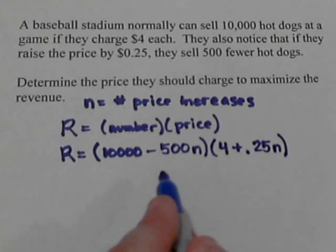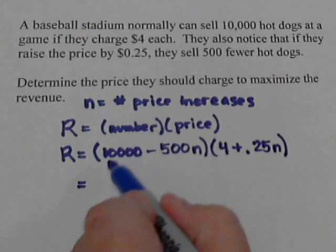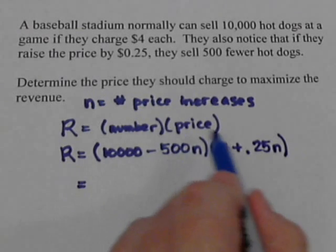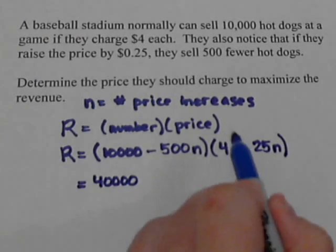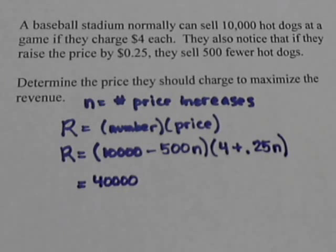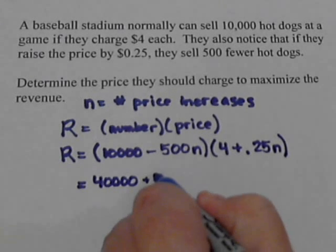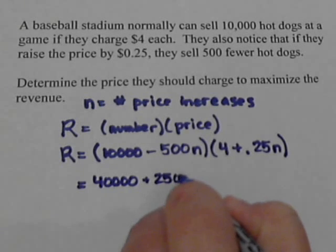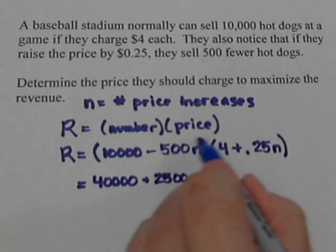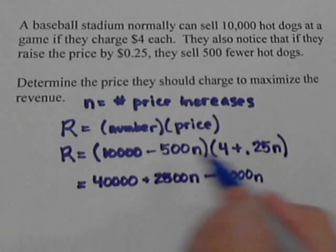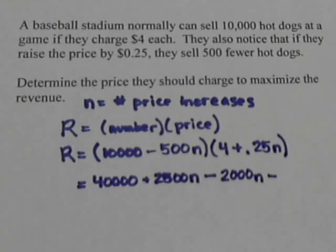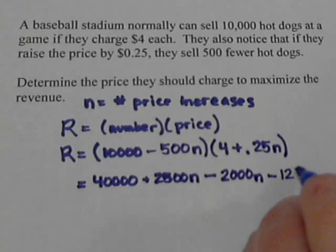Now we're going to multiply this out — FOIL this out. So 10,000 times 4 is 40,000. 10,000 times 0.25N gives us 2,500N. Minus 500N times 4, so that's 2,000N. Minus 500 times 0.25, that's 125N squared.